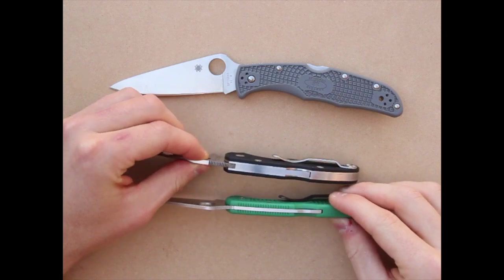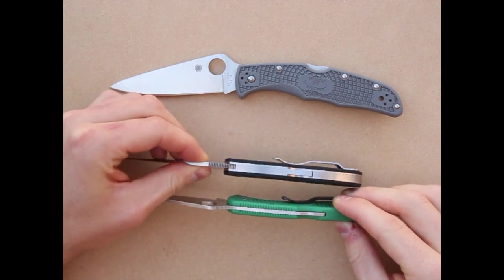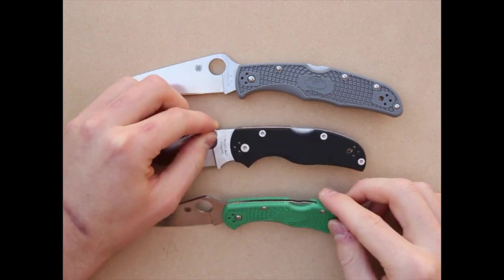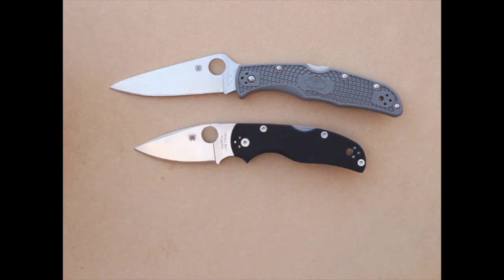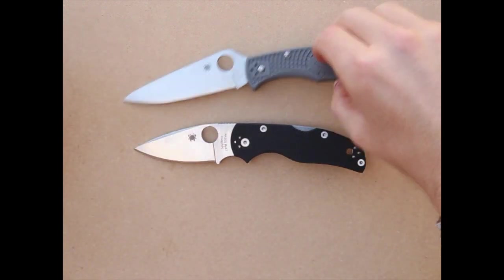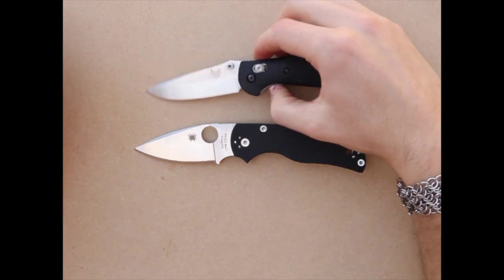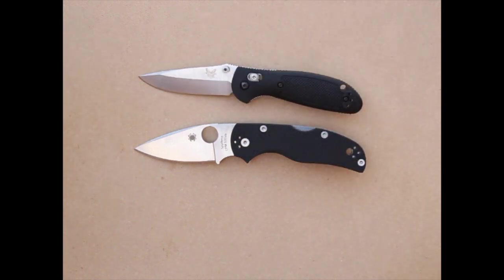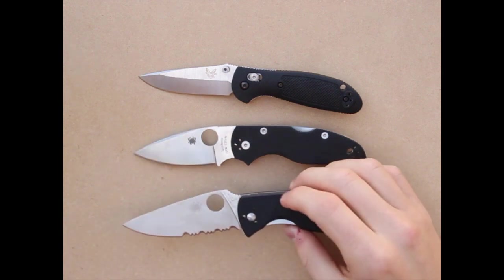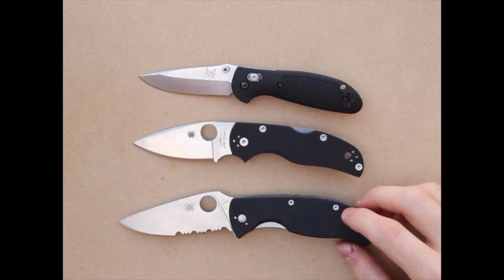Here's an idea of thickness—a little chunkier. Here's a Benchmade Mini Griptilian. And a Spyderco Tenacious.